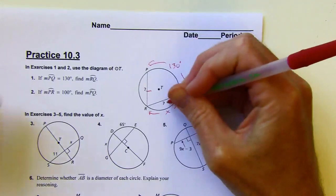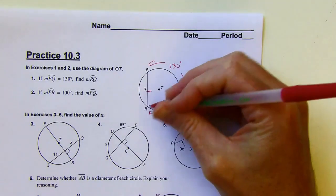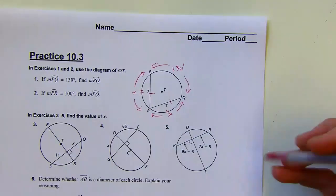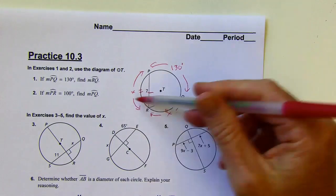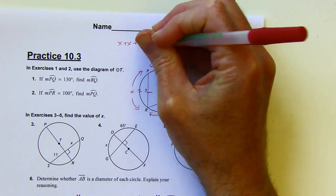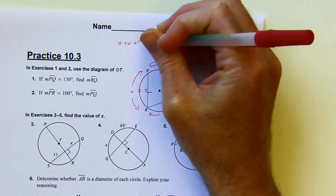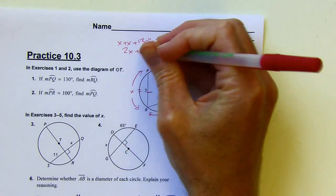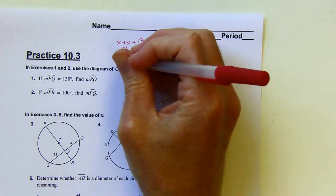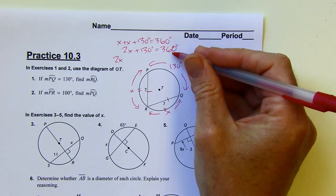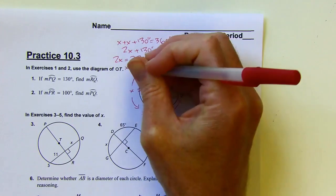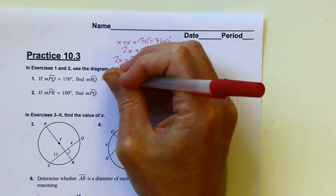Now, we've got two different chords that are congruent here, and that means that the arcs that are related to those are also going to be congruent. So if this is X, I could also call this X. And now, I've got the whole circle filled out with something. But I know the whole circle is going to be 360 degrees, so now I can say X plus X plus 130 would equal 360 degrees. So 2X plus 130 degrees is 360. I'll subtract 130. 360 minus 130 would be 230. And then I'll divide by 2, and that's going to be 115 degrees, and that is the measure of that arc.